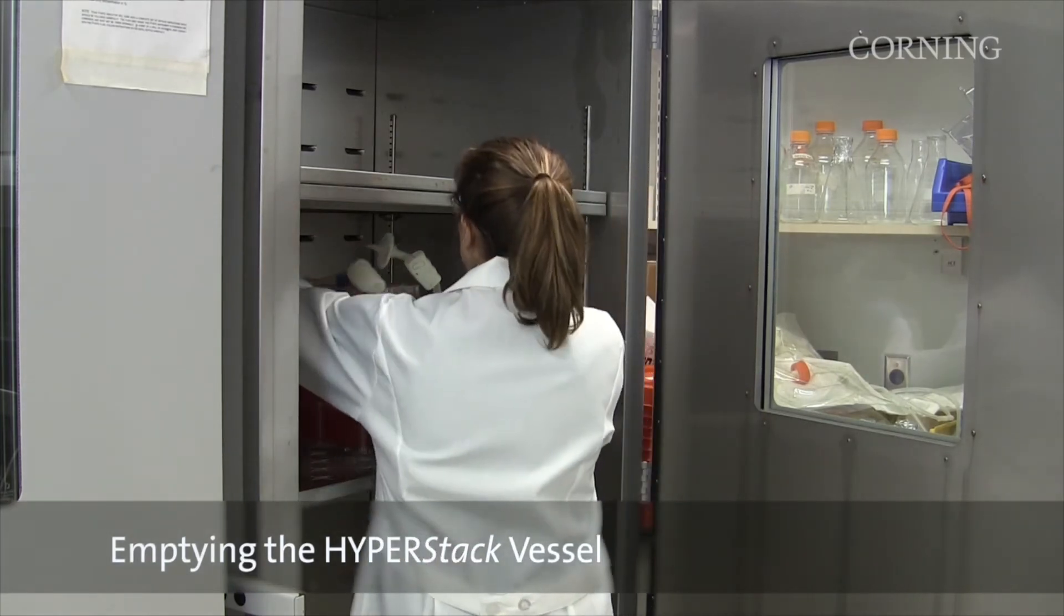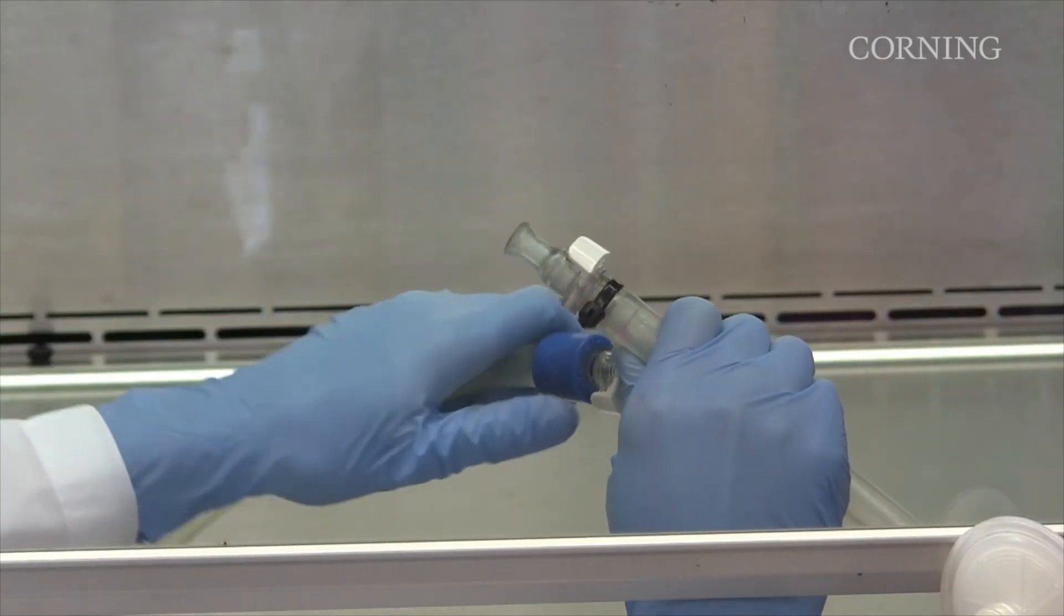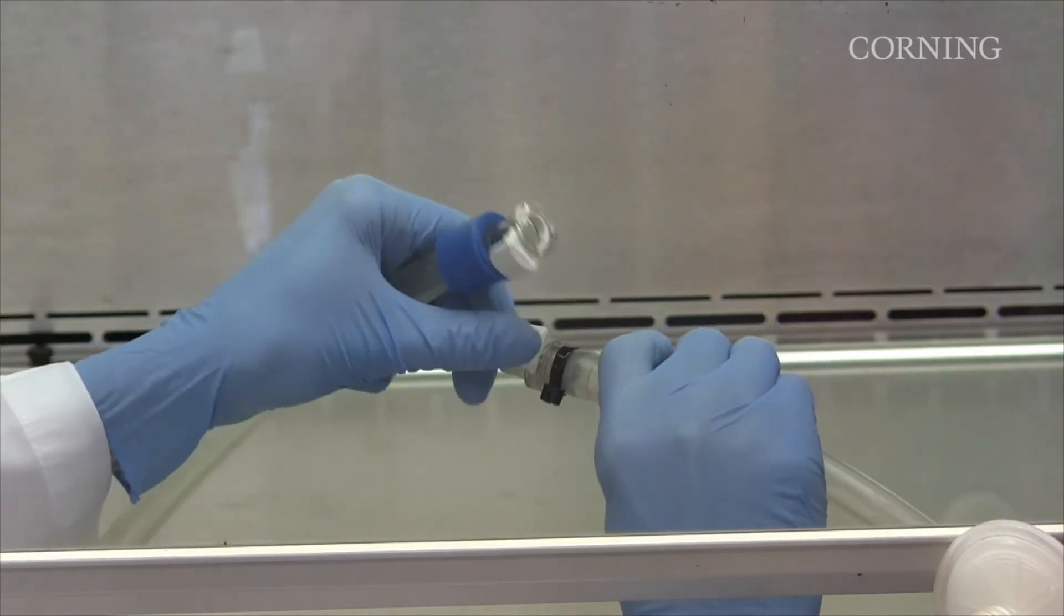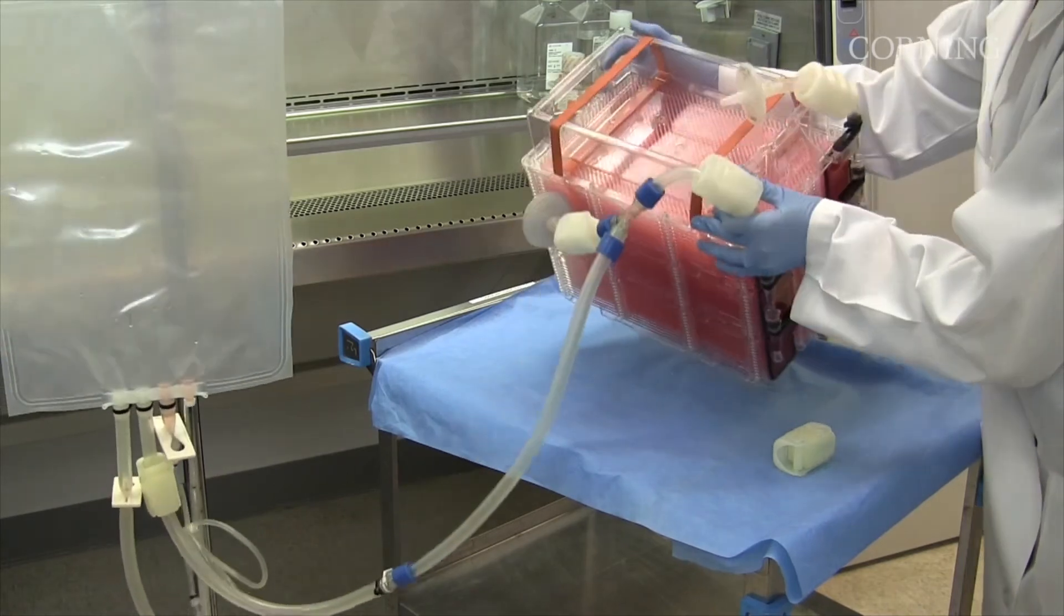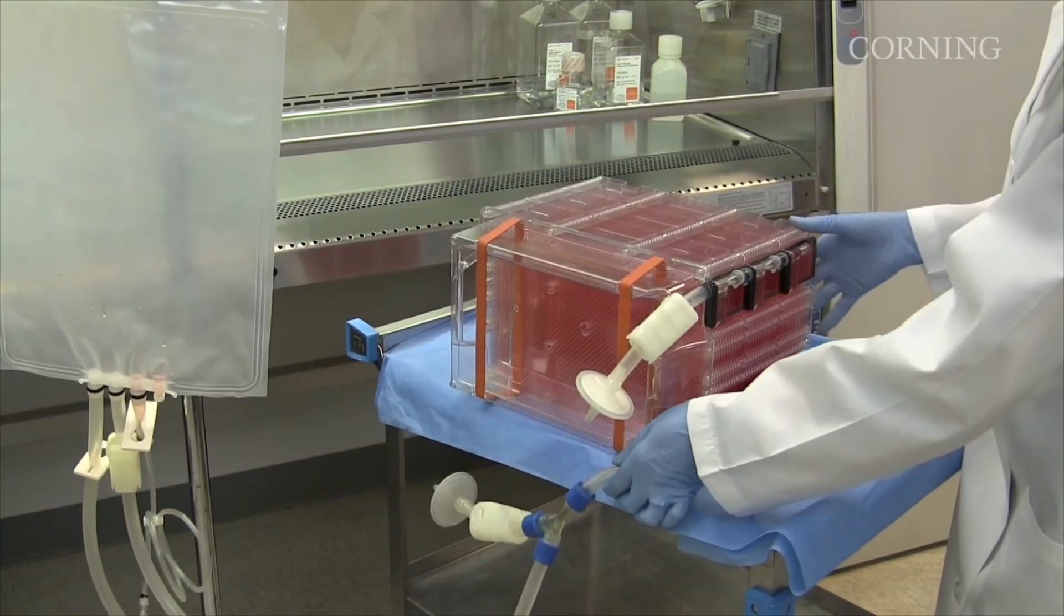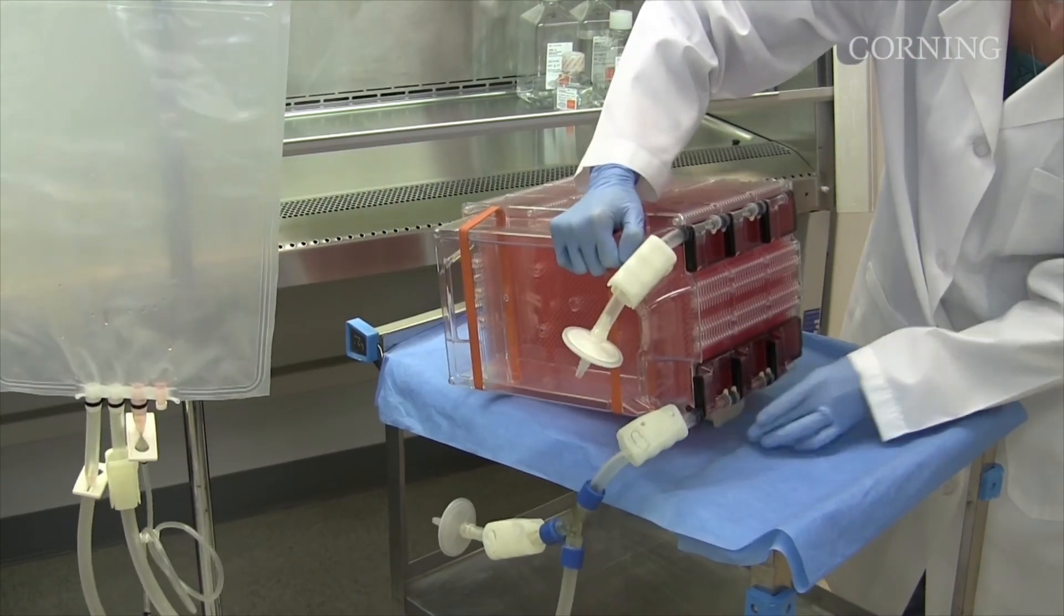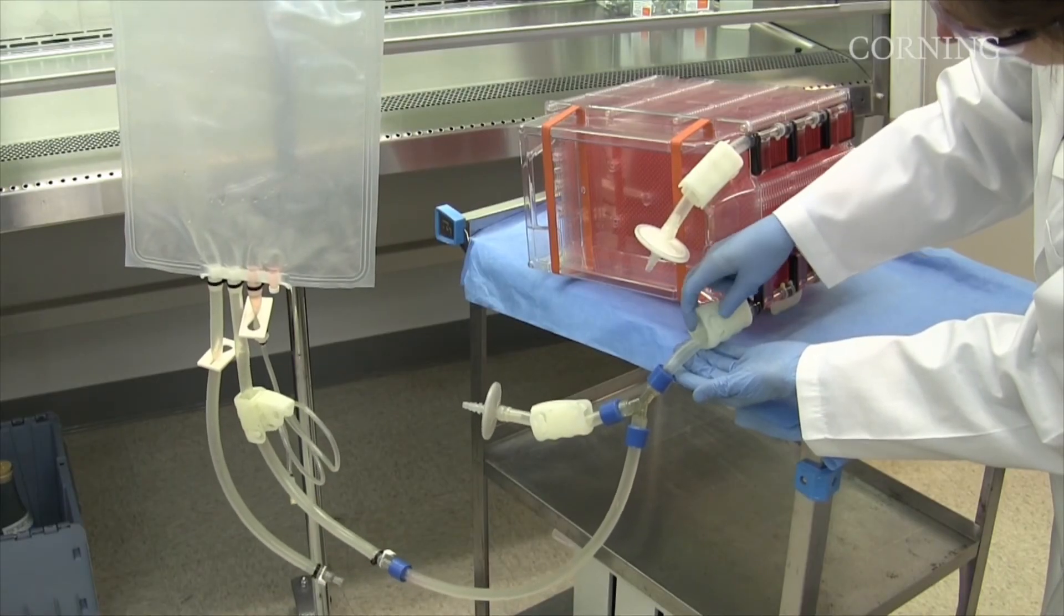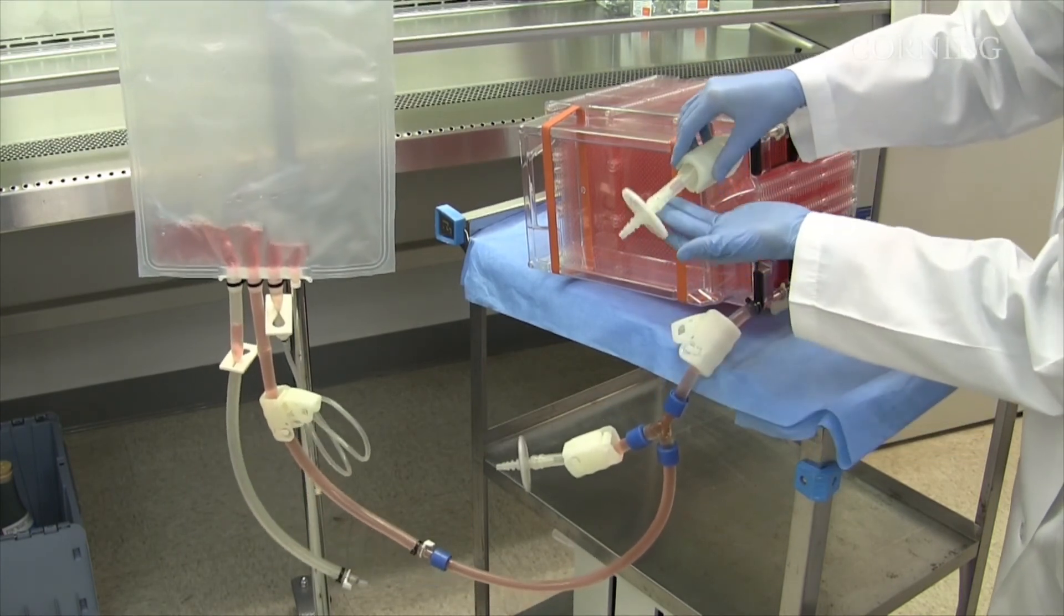Remove the HyperStack vessel from the incubator. Aseptically connect the liquid handling tubing via MPC quick connects or welding to a collection vessel. Place the HyperStack vessel in the fill position with the collection vessel lower than the height of the HyperStack vessel.